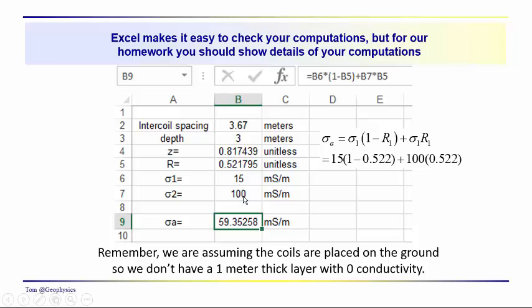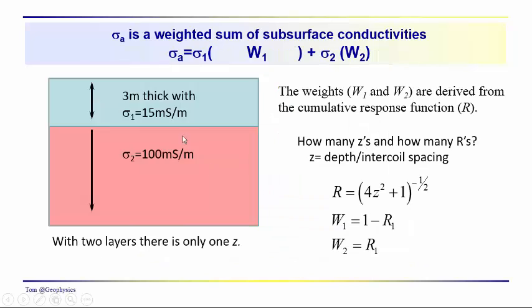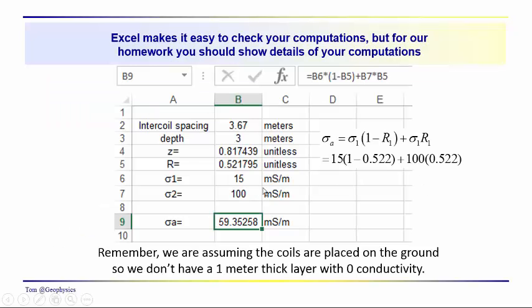As a weighted combination, if we come back to our model here, this 100 millisiemens per meter layer is 3 meters beneath the surface. We expect that the result is going to be higher than the conductivity of the first layer, higher than 15 millisiemens per meter, and it's close to 60. That's because the second layer is only 3 meters beneath the surface. So the R that we calculate: 1 minus 0.522 plus 100 times 0.522 gives us 59.